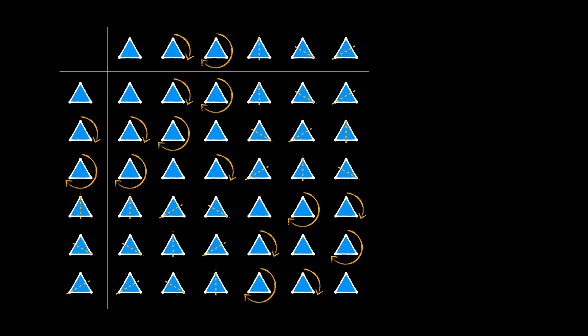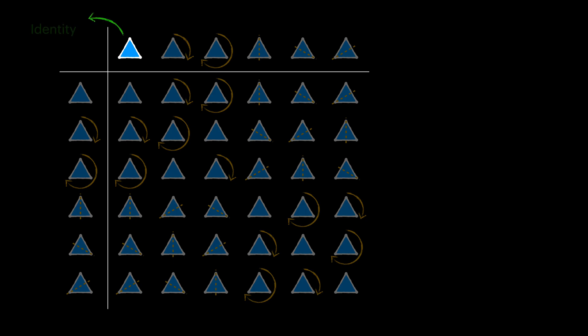For example, as you see, the first transformation is an identity action for our composition. Because combining any transformation with that one gives us the same action. And this is valid if we switch the position of them as well.